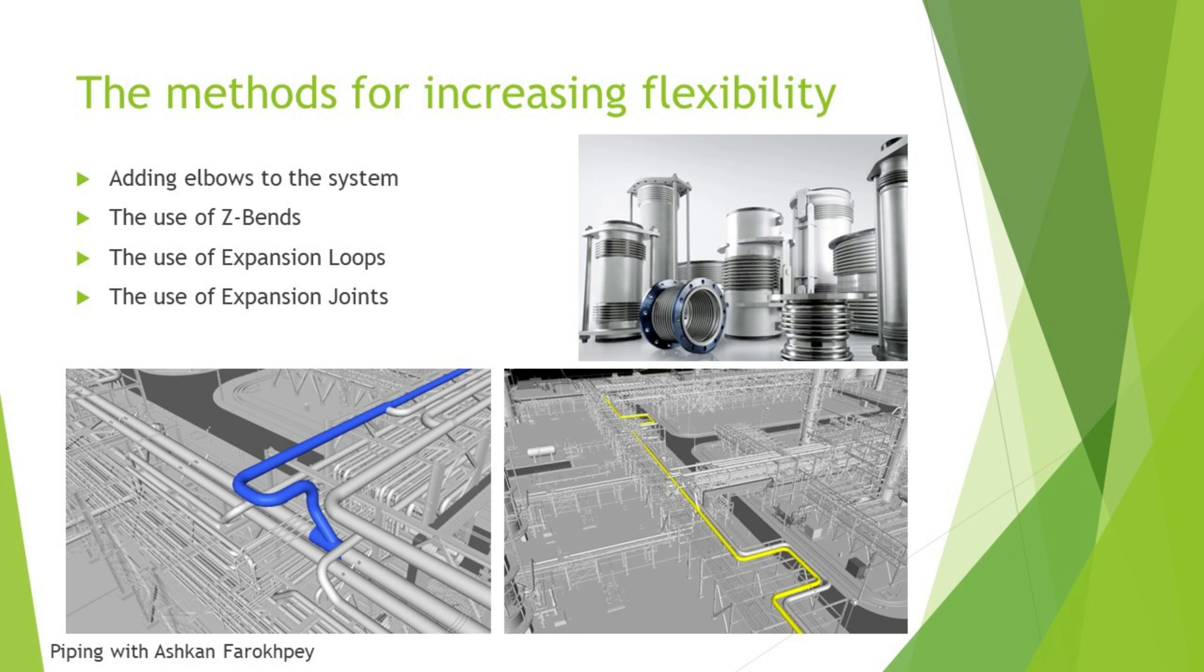The second method is using a Z-bend. The third method that you can see in the bottom pictures is using expansion loops, and we will use these two methods, method two and three, in CAESAR II. It is commonly used in piping systems to control the thermal expansion. And the final method, which is used in compact piping systems, is using expansion joints. The last method is much more complicated and I will upload a new video for using expansion joints, which is mostly used around the pumps in oil and gas industry.